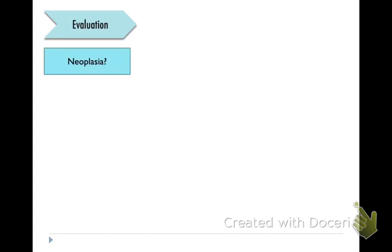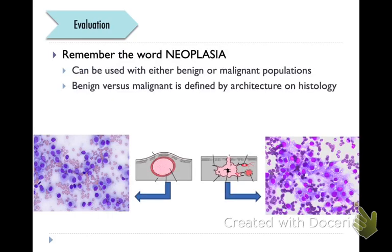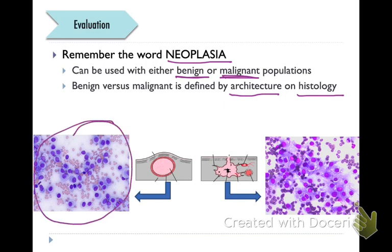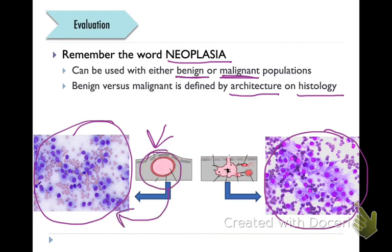The next thing we want to think about for categories is going to be neoplasia, and whether it's benign or malignant is what we need to ask. Remember that when we use the word neoplasia, it can be used with either benign or malignant populations of cells. Benign and malignant is often defined on architecture based on histology. Here we've got a benign neoplasm, a histiocytoma, and here we've got some sort of spindle cell tumor. The histology that would correlate to it is often a nice, well-circumscribed situation for benign lesions versus breaking out and being invasive for malignant situations.